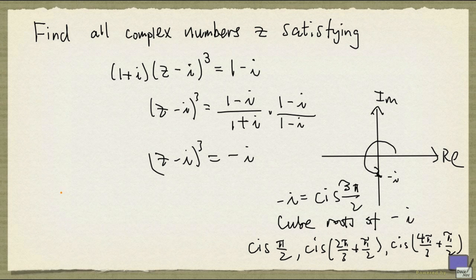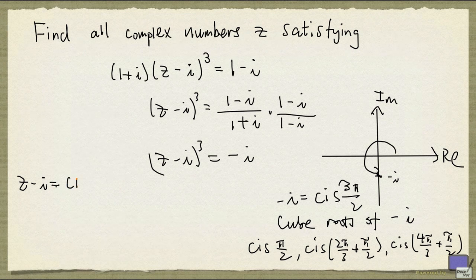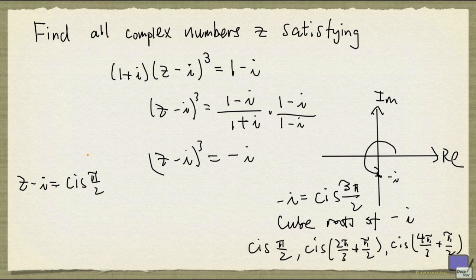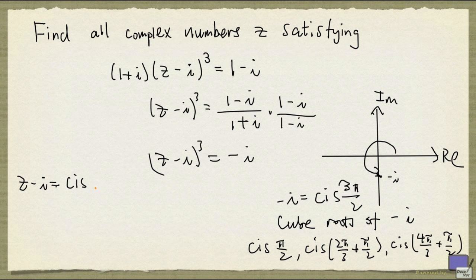And so we have three possibilities for z minus i. So z minus i could be cis of pi over 2. But cis of pi over 2 is simply i. So that's the first possibility.